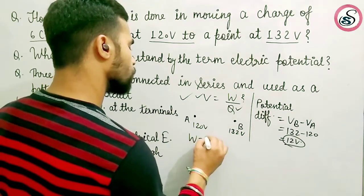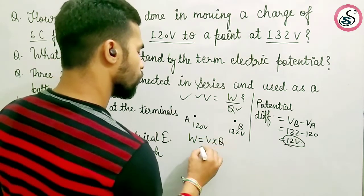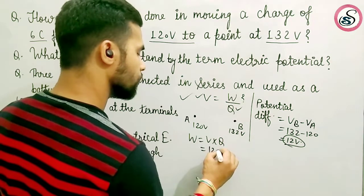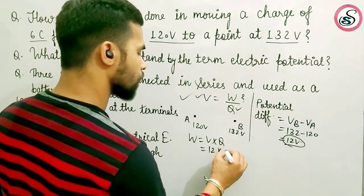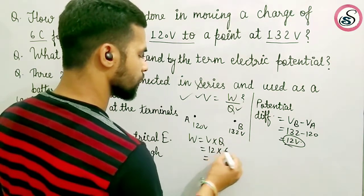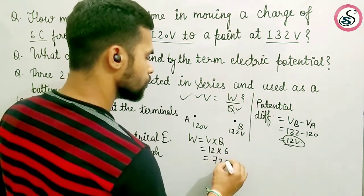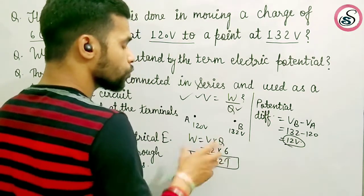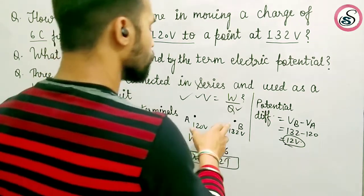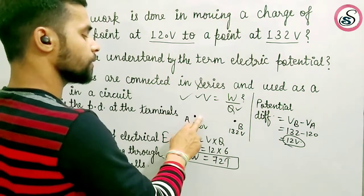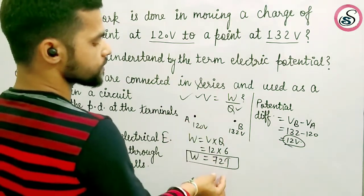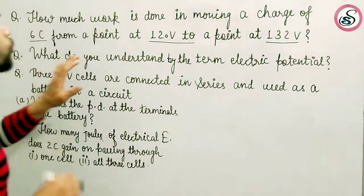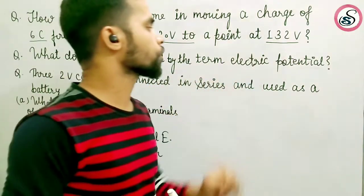W is equal to V into Q. The potential is 12 volts and the charge value is 6, so that gives us 72 Joules. The work done in moving the 6 coulomb charge from point B to point A is 72 Joules. The second question asks: what do you understand by the term electric potential?